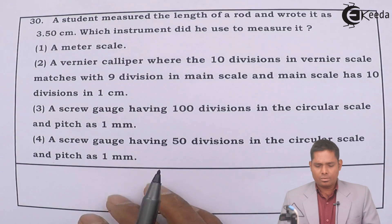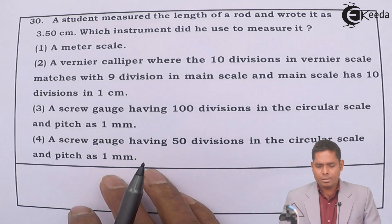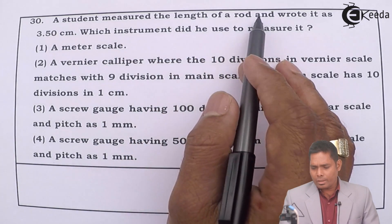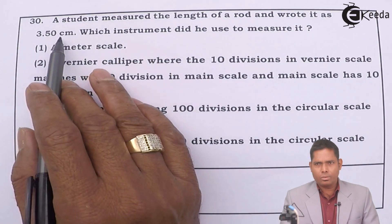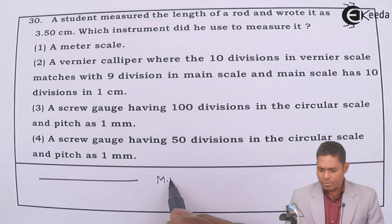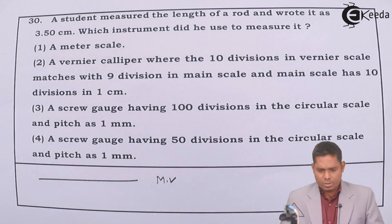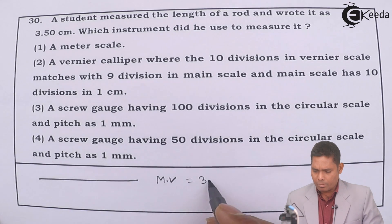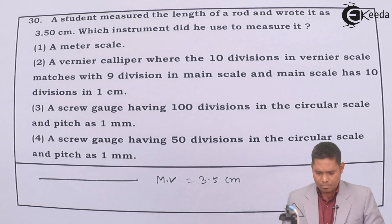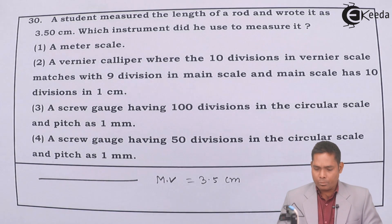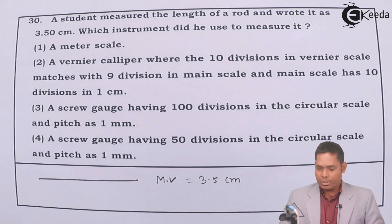So this is the last question for this physics paper. A student measures the length of a rod and wrote it as 3.50 cm. The measured value is 3.50 cm. So which instrument did he use to measure it?